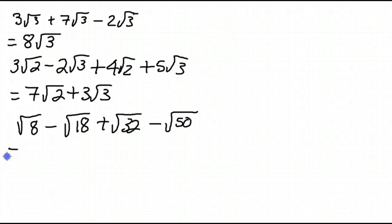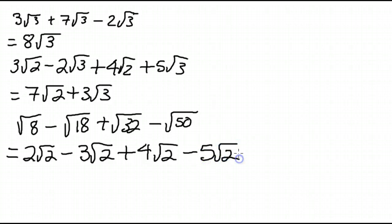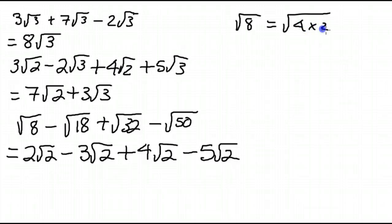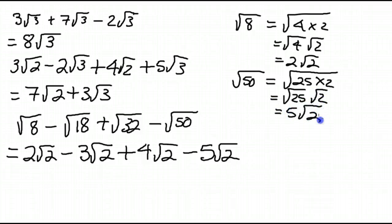So root 8 is the root of 4 times 2, which is 2 root 2. Root 18 is 3 root 2. Root 32 is 4 root 2. And root 50 is 5 root 2. Root 8 is the root of 4 times 2, which is root 4 times root 2, or 2 root 2. Root 50: we're looking for a perfect square that goes into 50, so that's 25 times 2. Root 25 times root 2 is 5 root 2. You just want to look at root 18 and say, oh, that's 9 times 2, so the square root of 9 is 3 — you get 3 root 2. And root 32 is 16 times 2.